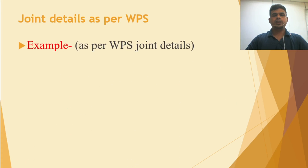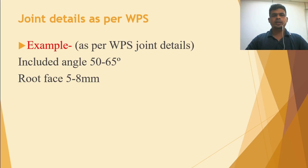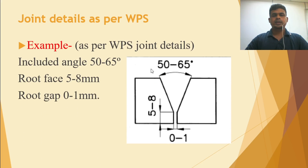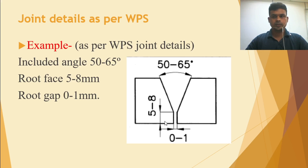As an example, I have taken a screenshot from a WPS to show you the actual values. This WPS mentions an included angle of 50 to 65 degrees. The root face is 5 to 8 mm — note that while the general guideline is 1 to 2 mm, this WPS specifies 5 to 8 mm, so we must follow the WPS. The root gap is 0 to 1 mm — the general value is 1 to 4 mm, but this WPS specifies 0 to 1 mm. This is why I took pictures from a different WPS — to help you understand that the actual requirements depend on your specific WPS.